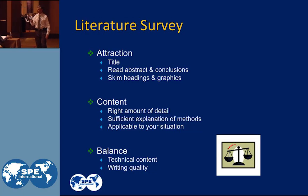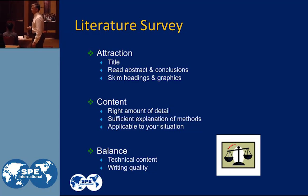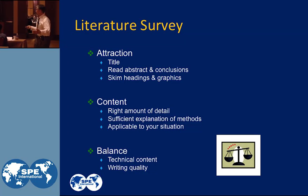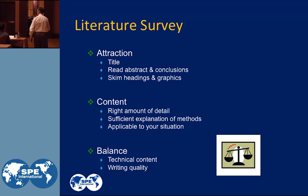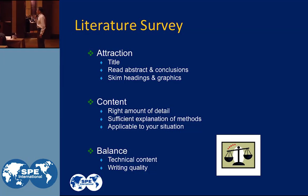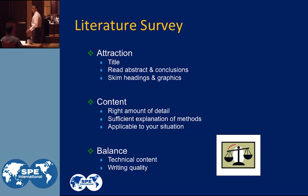In your literature survey — what has attracted you when you wanted to read a paper? It may have been the title. You read the abstract, maybe go to read the conclusions. Skim the headings and the graphics, and you decide whether you want to read the paper. What's in the content? What's the right amount of detail — does it describe the process you're reading about? Does it have sufficient explanation of those methods? If it's a methodology or simulation-type paper, does it explain the methods so you can go back and do it yourself? And is it applicable to what you're doing?